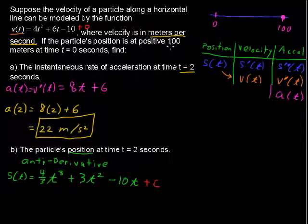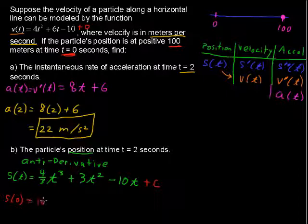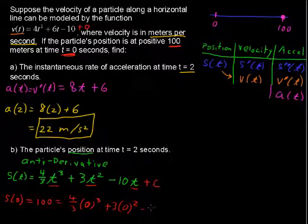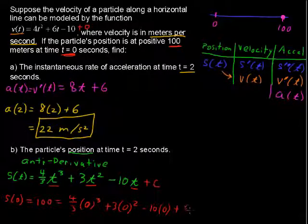And in fact, we're going to find that the constant is 100. Because if I said that s(0), we're given a little clue here, at time t = 0, the position at zero equals 100. And if we plug in zero everywhere we saw t, then we have 4/3 times 0³ plus 3 times 0², because we have the position function now, minus 10 times 0 plus this constant unknown.